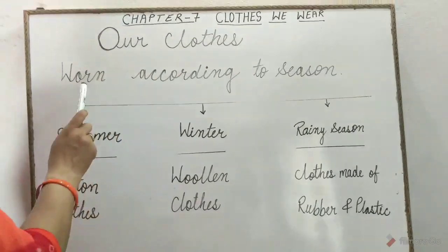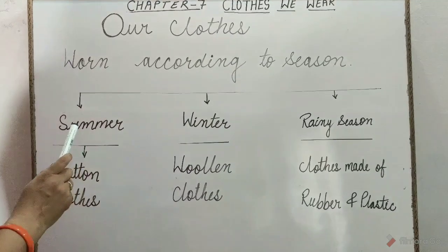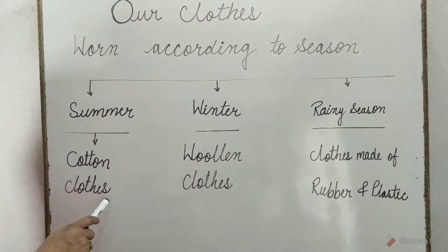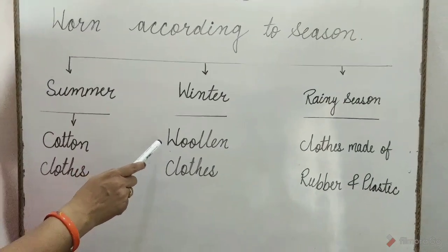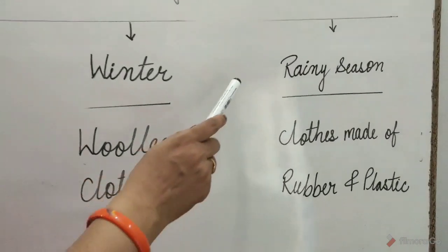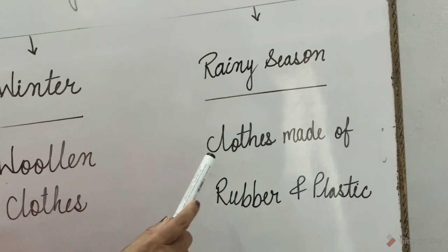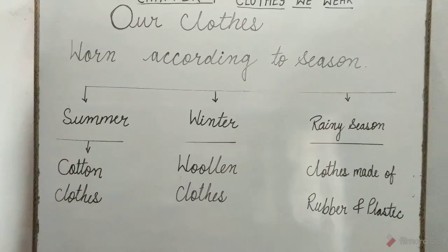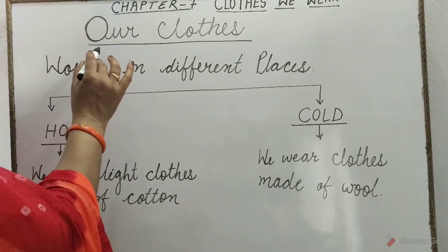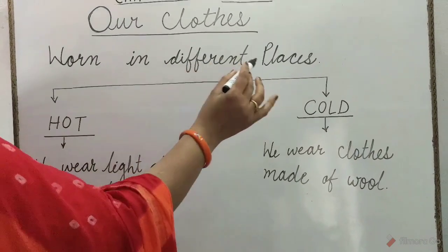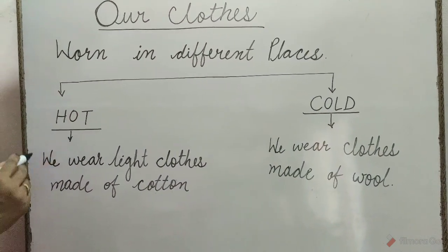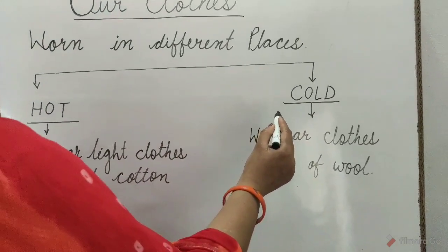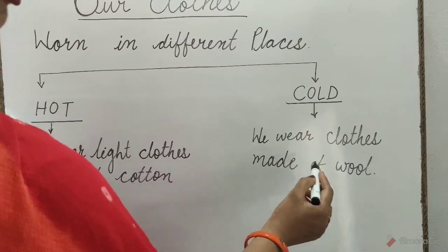Our clothes vary according to season. In summer, we wear cotton clothes. In winter, we wear woolen clothes. In rainy season, we wear clothes made of rubber and plastic. At hot places, we wear light clothes made of cotton, and at cold places, we wear clothes made of wool.